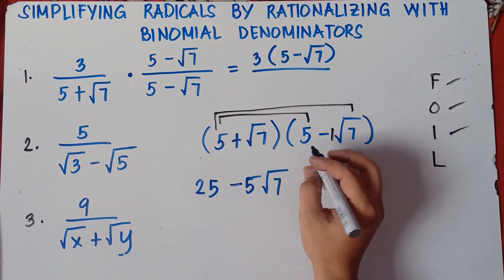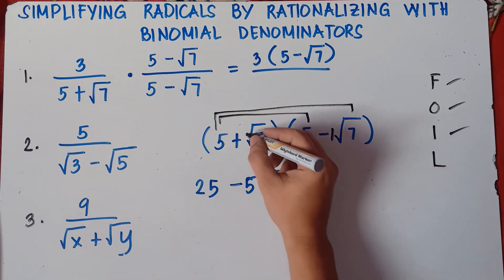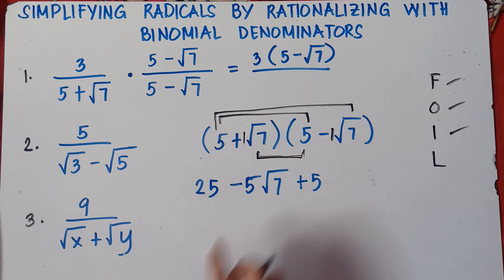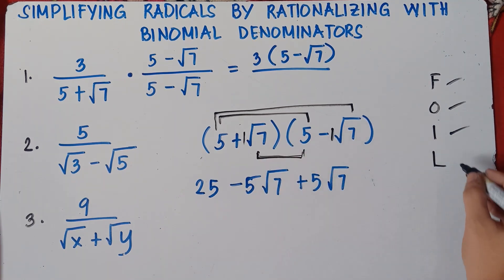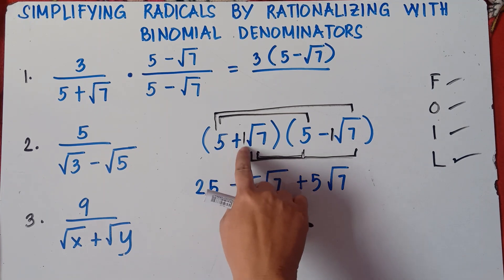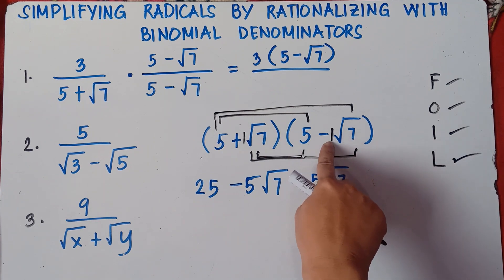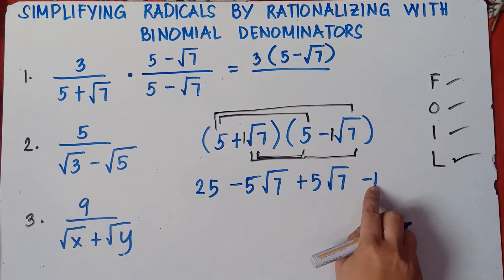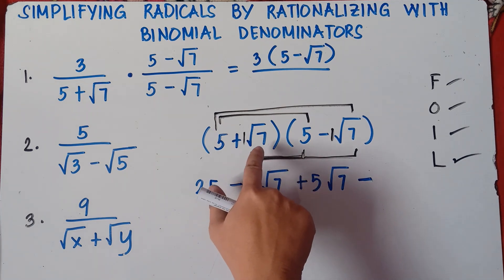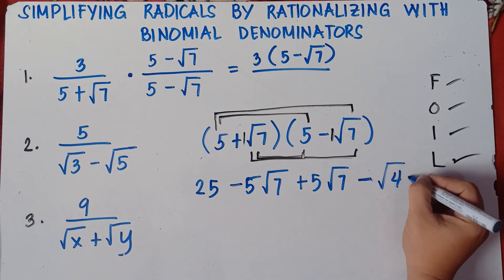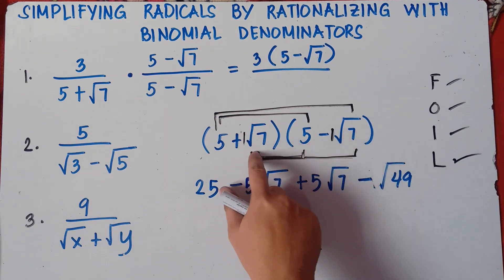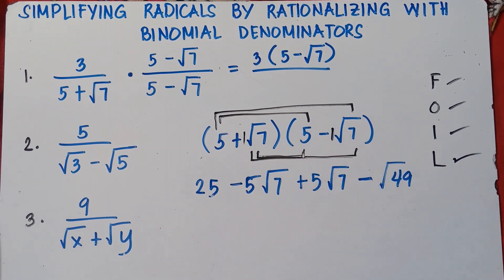Inner: square root of 7 times 5. Since 5 doesn't contain a radical, positive 5 times positive 1 gives positive 5, so inner gives positive 5 square root of 7. Last: square root of 7 times square root of 7. Positive 1 times negative 1 gives negative 1. Square root of 7 times square root of 7 equals square root of 49.